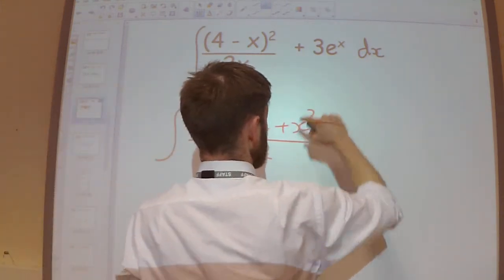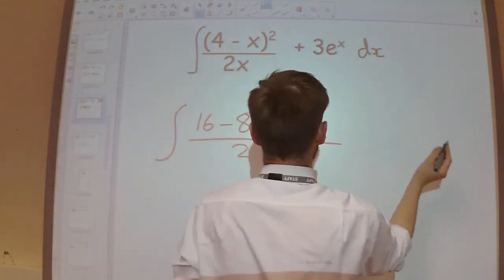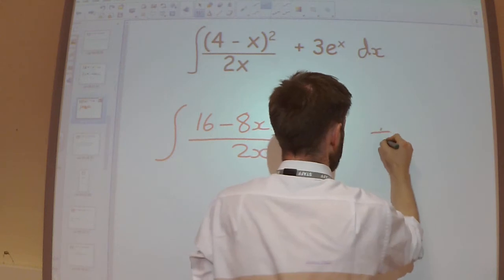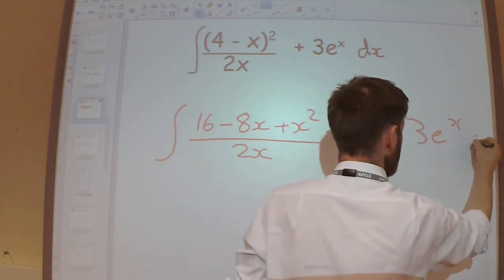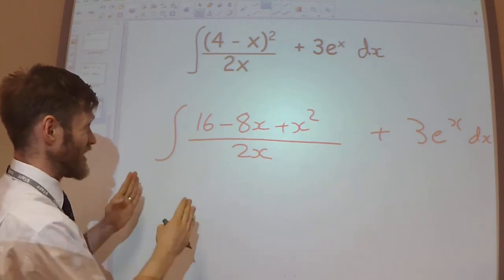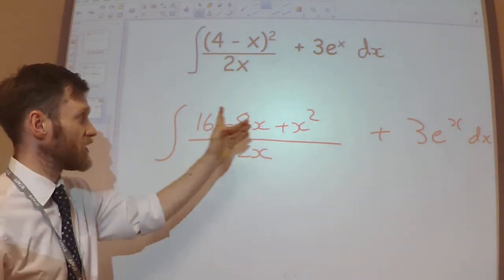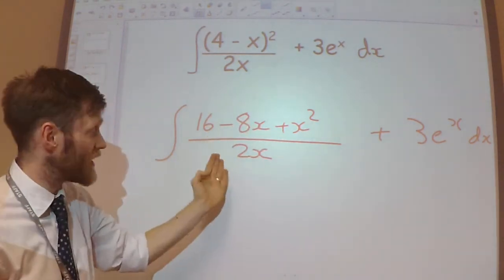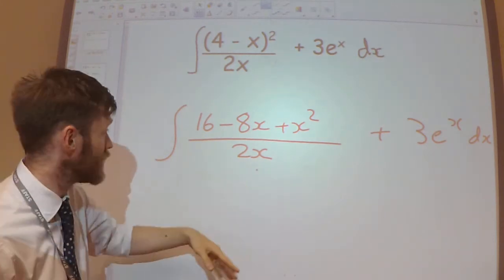So the 3e to the x, I'm not going to do anything with that yet, so I'm just going to leave that over here. Next, now I've got these three terms on the top, and they're all divided by 2x. I'm thinking, I could write this as each of them individually being divided by 2x.